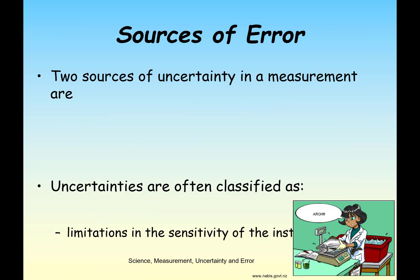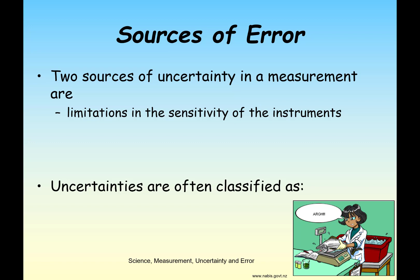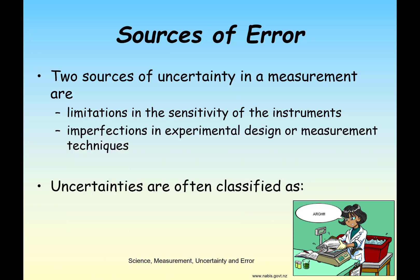Two sources of error in a measurement could be limitations in the sensitivity of the instrument — say a meter stick that only measures to the nearest half centimeter instead of the nearest millimeter — and also imperfections in experimental design or measurement techniques. We can classify uncertainties and errors into two categories: random errors and systematic errors.